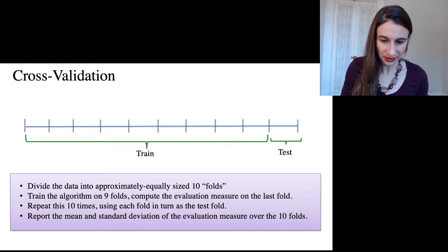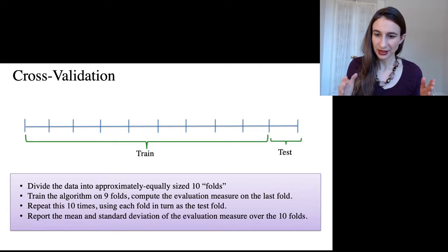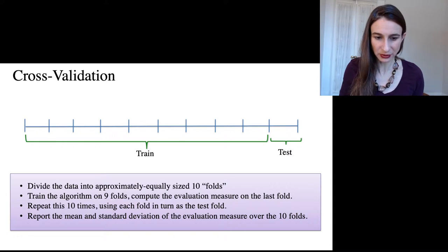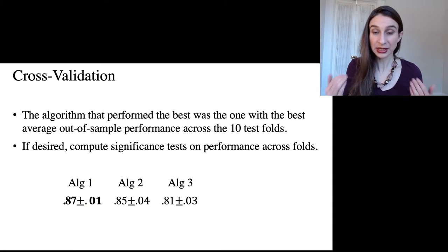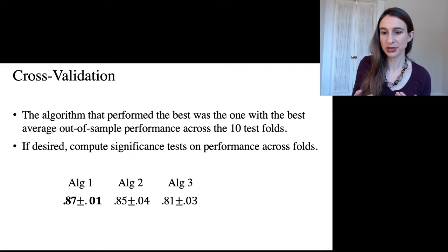So let's go over how this works. So here's my training set, and I divide it into ten folds, and then I reserve one fold as the test fold, train it on nine of the folds, and then evaluate it on the tenth fold, the test fold. And then I rotate which fold as the test fold, and then in the end, I report the mean and standard deviation of the evaluation measure across the folds.